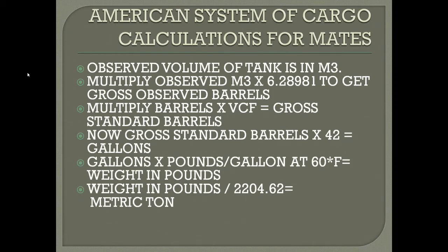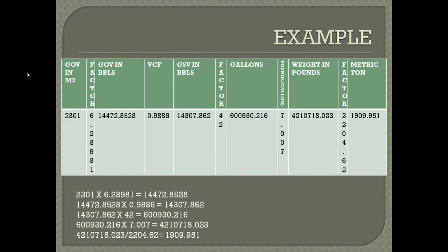Now we will look at a small example. The observed volume multiplied by 6.28981 gives you 144728.8528 — that is your GOV in barrels. Multiply that by the VCF to get your Gross Standard Volume in barrels. Multiply that by a factor of 42 to get your gallons. Then multiply by the pounds per gallon to get your weight in pounds, and divide by 2204.62 to get your metric tons.